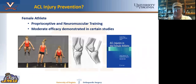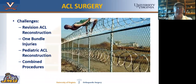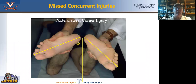Moving on to injury prevention: this can include jump testing and landing testing. We want to teach especially our female athletes to land in more flexion and less valgus. Skier prevention works for advanced skiers but not for beginners. The challenges ahead include revision ACLs, single bundle injuries, pediatric ACLs, and combined procedures. It's important to find concurrent injuries and be concerned about non-anatomic problems. Don't miss the posterior lateral corner injury — external rotation asymmetry on the left foot is associated with the posterolateral corner injury.